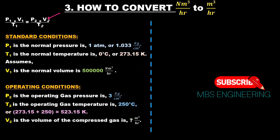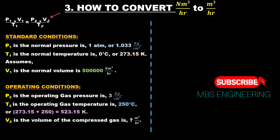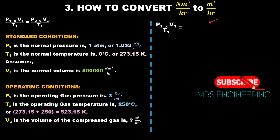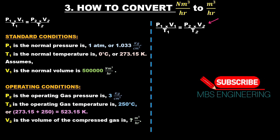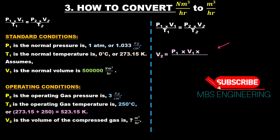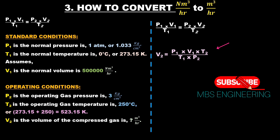To calculate V2, we rearrange the ideal gas law formula: P1 × V1 / T1 = P2 × V2 / T2. Therefore, V2 = (P1 × V1 × T2) / (T1 × P2).